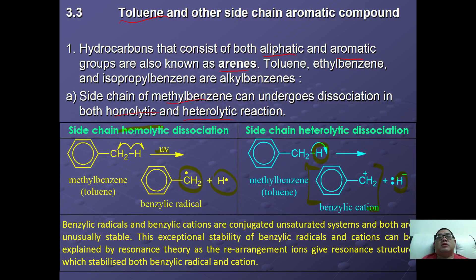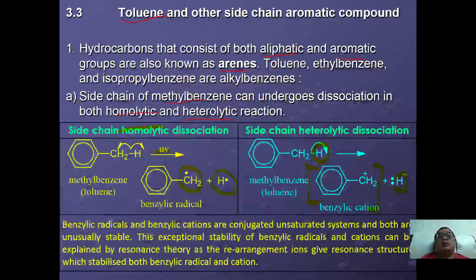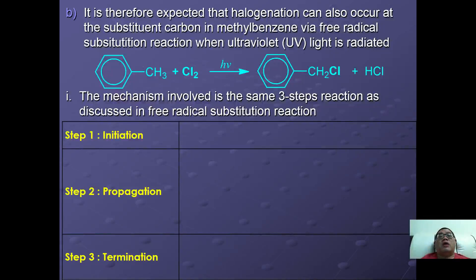Both the benzylic radical and benzylic cation are conjugated unsaturated systems and are unusually stable. This stability can be explained using resonance structures, though we will not discuss in detail how resonance stabilizes the benzylic radical and cation. Therefore, it is expected that halogenation can occur at the methyl part of methylbenzene via free radical substitution reactions.